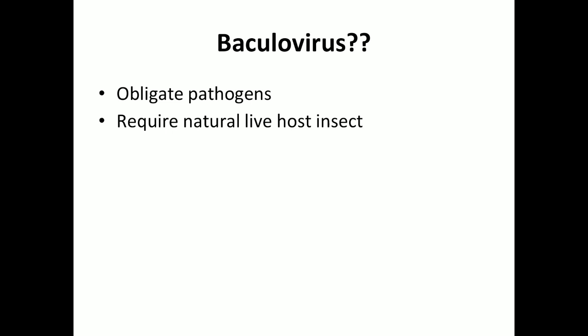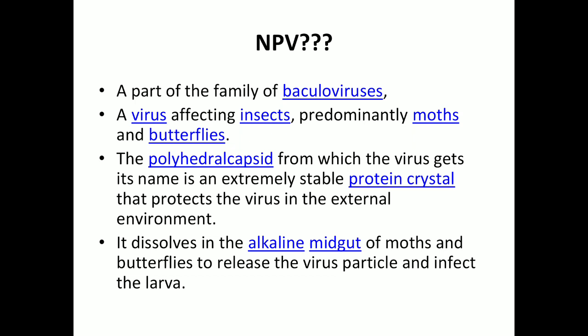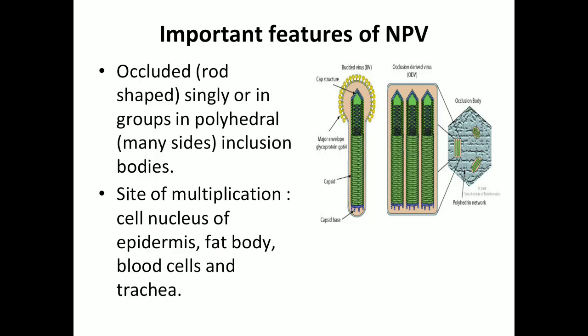First of all, what is a baculovirus? It is an obligate pathogen and it requires a living host. What is NPV? NPV stands for Nuclear Polyhedrosis Virus. It is a family of baculoviruses, a virus which infects or affects moths and butterflies. It contains a polyhedrin capsid — an extremely stable protein crystal which protects the virus in the external environment — and it dissolves in the alkaline midgut of moths, releasing the virus particle and infecting the larvae.